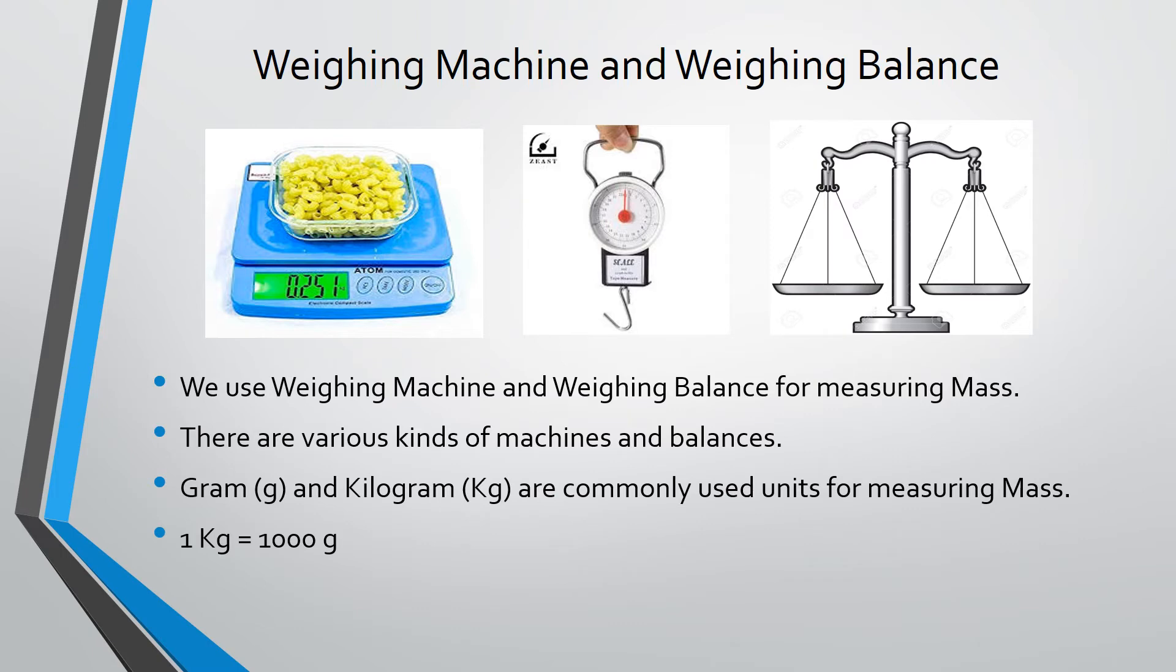Gram (small g) and kilogram (capital K and small g) are commonly used units for measuring mass. One kilogram is equal to one thousand grams.